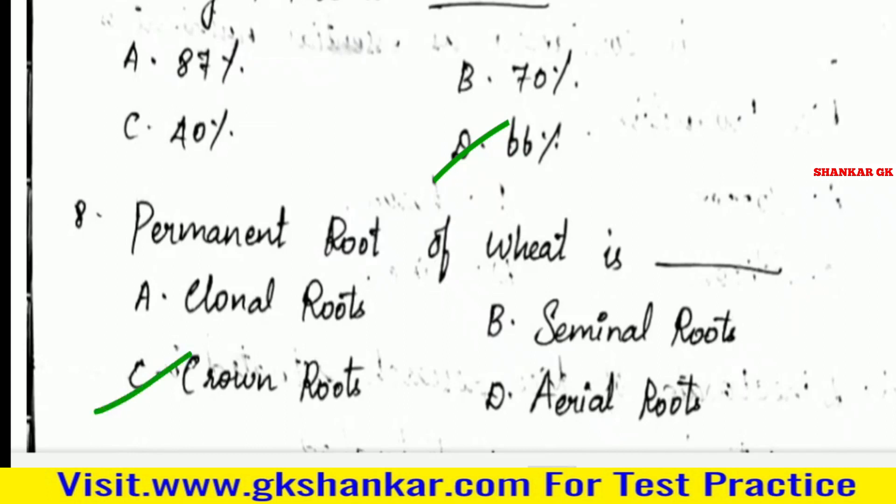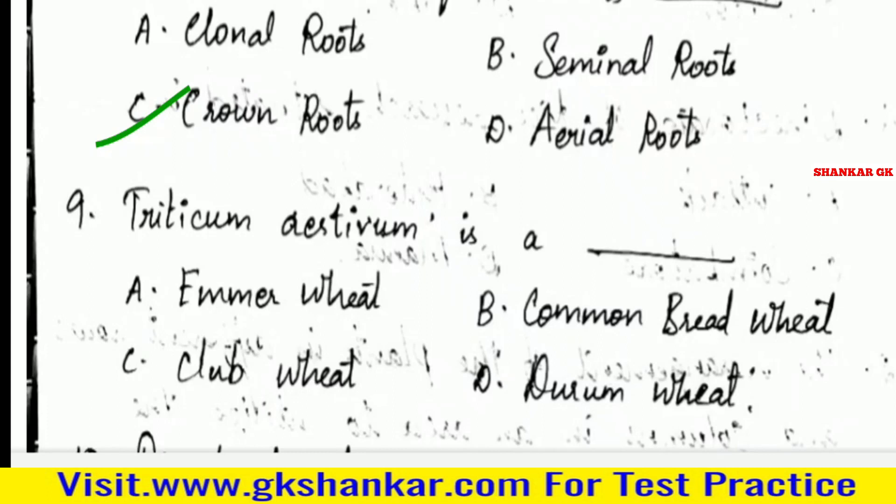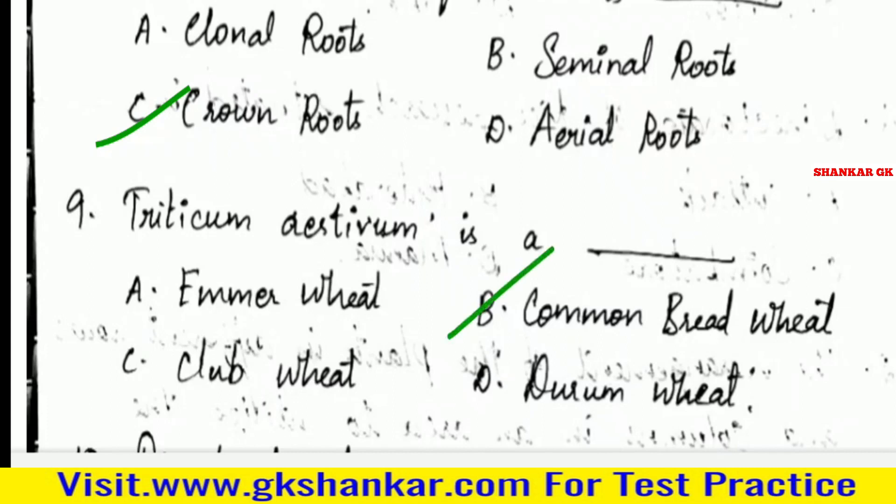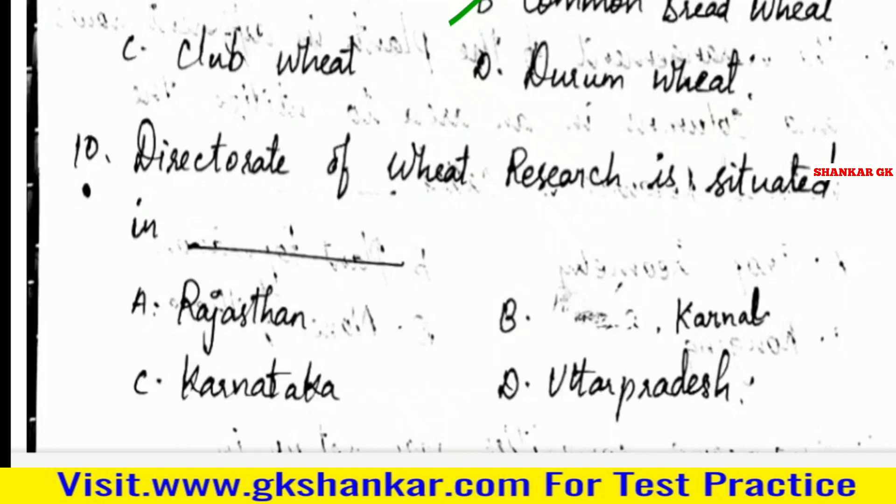Ninth question: Triticum SDV is — A. Emer wheat, B. Common bread wheat, C. Club wheat, D. Durum wheat. Answer: B. Common bread wheat.